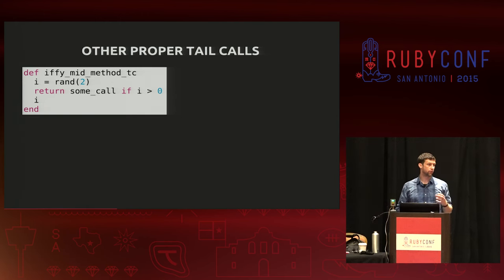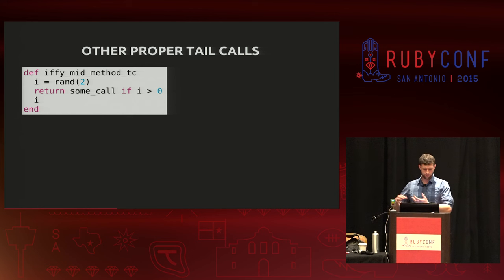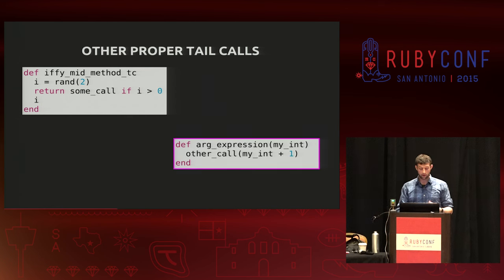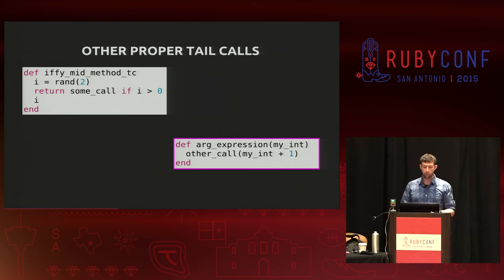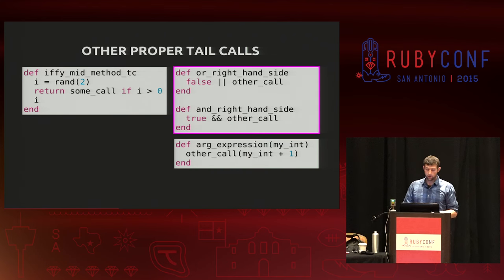There are very specific circumstances in which you can make a tail call — these are called tail call sites. For example, in the middle of a method behind an if statement, 'return some_call' is actually a valid tail call because it's attached to return, so some_call is really the last thing that method does. Another example: calling other_call with an expression in its arguments — by the time we call other_call, the expression my_int plus one will already have been evaluated. You can also attach it to Boolean operations like 'false or other_call' or 'true and other_call.'